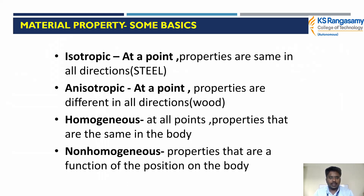Isotropic means at a point the properties are same in all directions — example: steel. Anisotropic means at a point the properties are different in different directions — example: wood. Homogeneous means at all points the properties are the same throughout the body. Non-homogeneous means the properties are a function of position within the body. These are the major properties of the material.